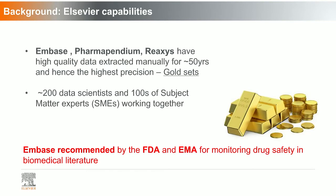We have been extracting this information manually for a long time. You can imagine the data we have been collecting — we are sitting on a gold mine that can be used to actually train machines so that we can build better prediction models. EMBASE, which provides high-quality, high-precision information and has been curated manually for the last 50 years, has been recommended by the FDA, AMA, and other regulatory authorities for monitoring drug safety in biomedical literature.